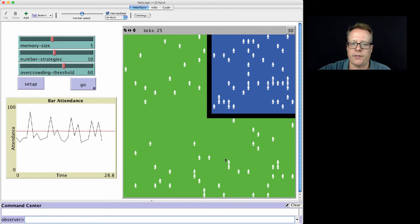Here's the actual world. There's a green space, which is supposed to indicate outside the bar, and the bar is indicated by this blue space. I actually helped build this model back when I first became part of the NetLogo models library.